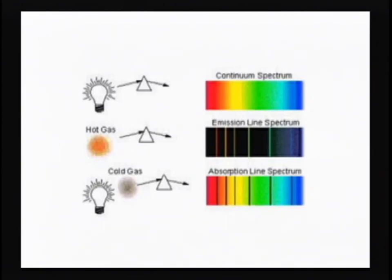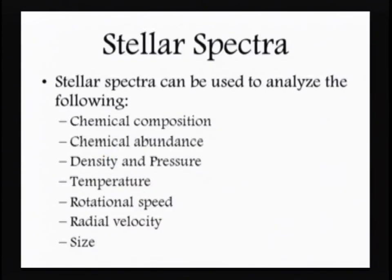We see this within the outer envelopes of stars, helping us find out what's in the star. By looking at a star's spectrum, we can analyze chemical composition, chemical abundance, densities, pressures, temperatures, rotational speed, radial velocity toward or away from us, and even the size of that star. It's a tremendous amount of information.